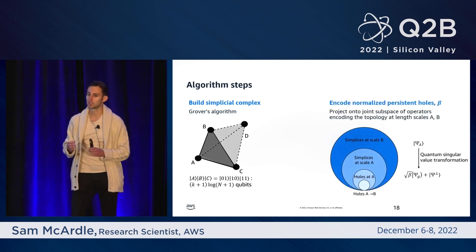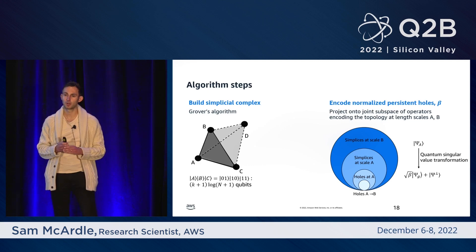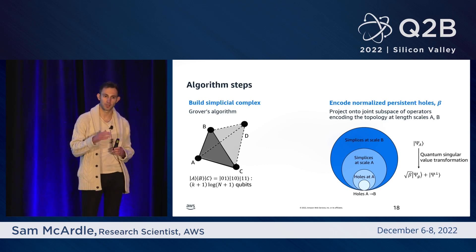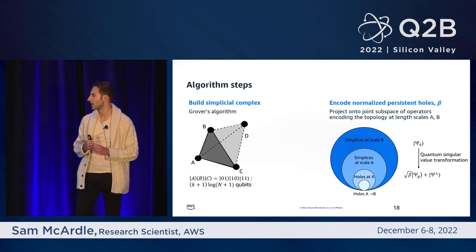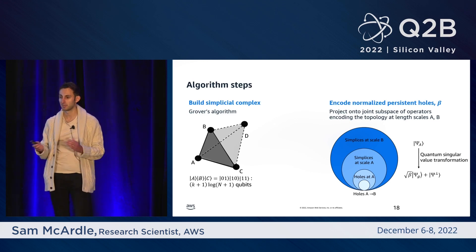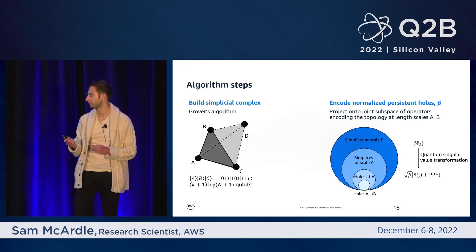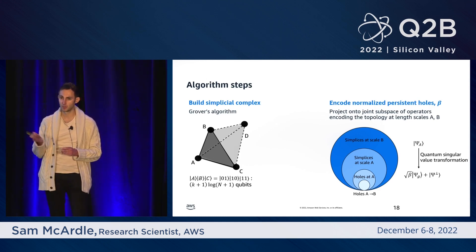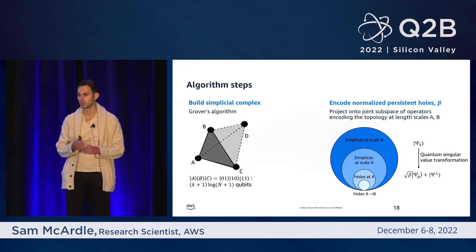The next step of the algorithm is to encode the number of persistent holes into the quantum state. The way we do that is to take the state representing our simplicial complex and project it down into the subspace of the Hilbert space that contains the persistent holes between the short length scale and the long length scale. The approach we use is known as the quantum singular value transformation — a very powerful framework for realizing many quantum algorithms and in particular non-unitary transformations between subspaces. The number of persistent holes divided by the number of simplices in the complex gets encoded as the amplitude of the quantum state, and you can read this out using quantum amplitude estimation.